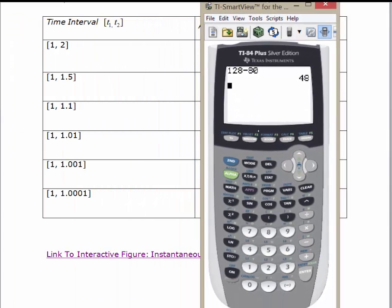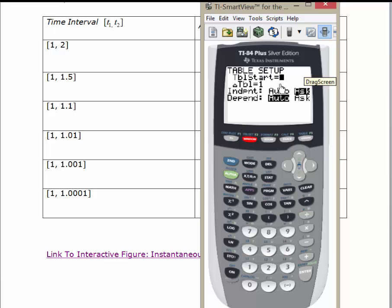The first thing I'm going to do is I want to set up my table. I'm going to go to second window, and this is my table setup. I want my independent variable to be on ask, and I want my dependent variable to be on auto. If your screen, don't worry about the table start.